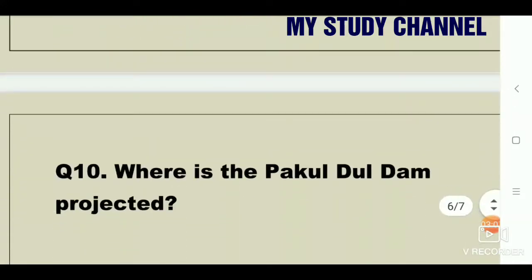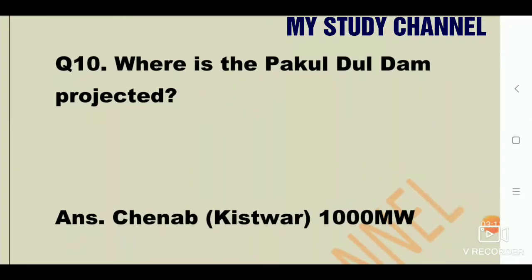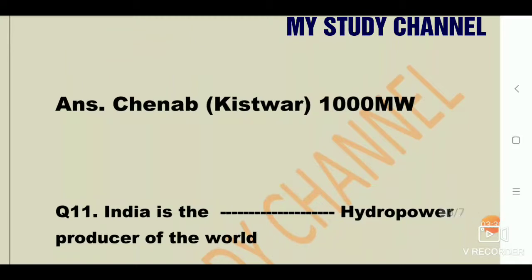Next question: Where is the Pakul Dal Dam projected? The answer is Chenab, with a capacity of 1000 megawatt. Next question — most important: India is the fifth hydro power producer of the world.